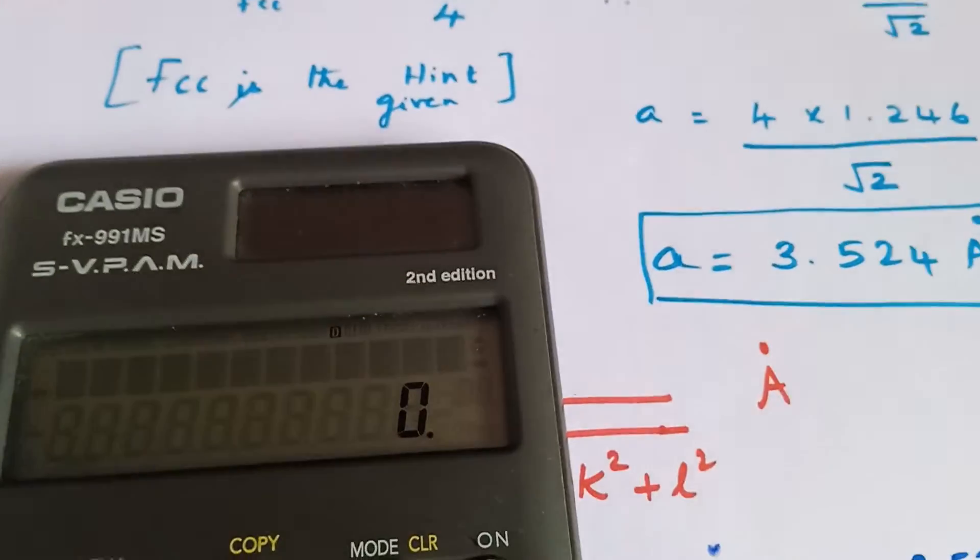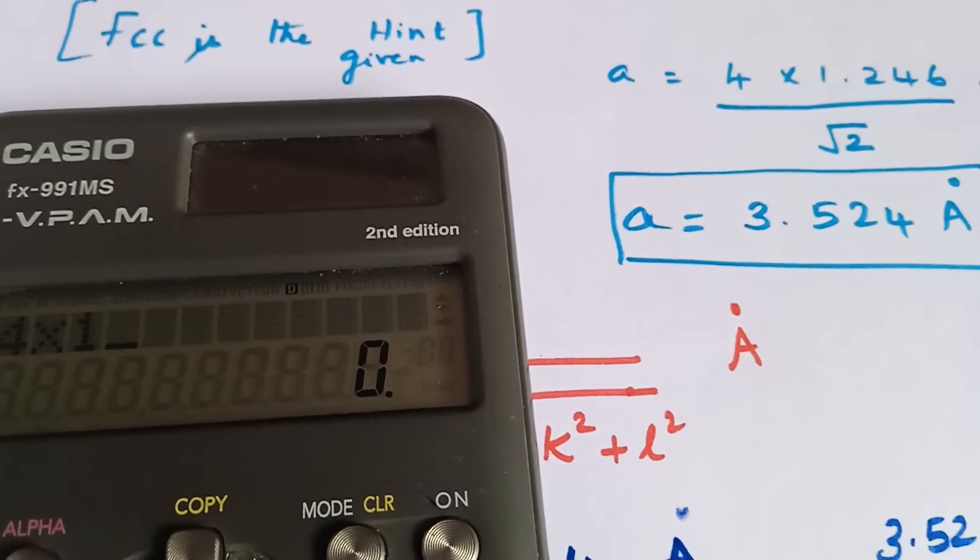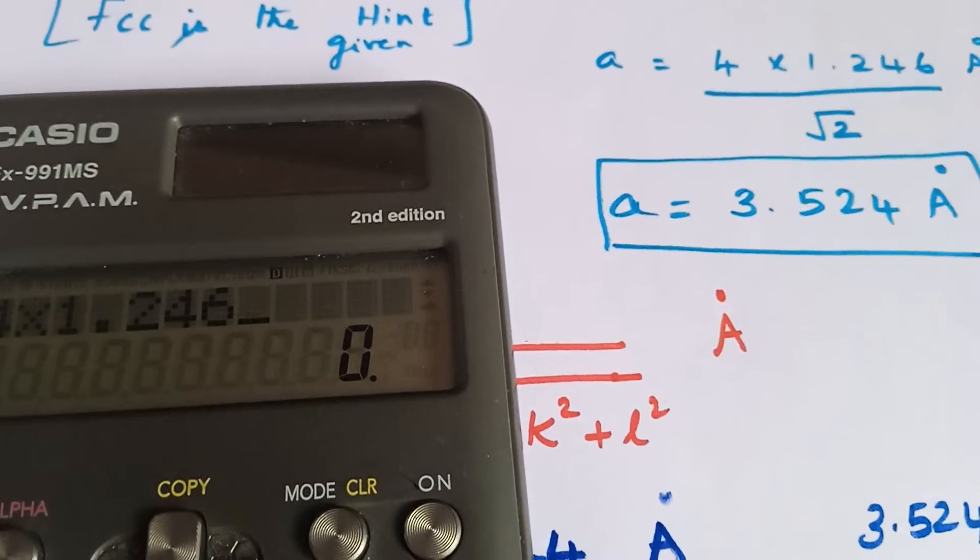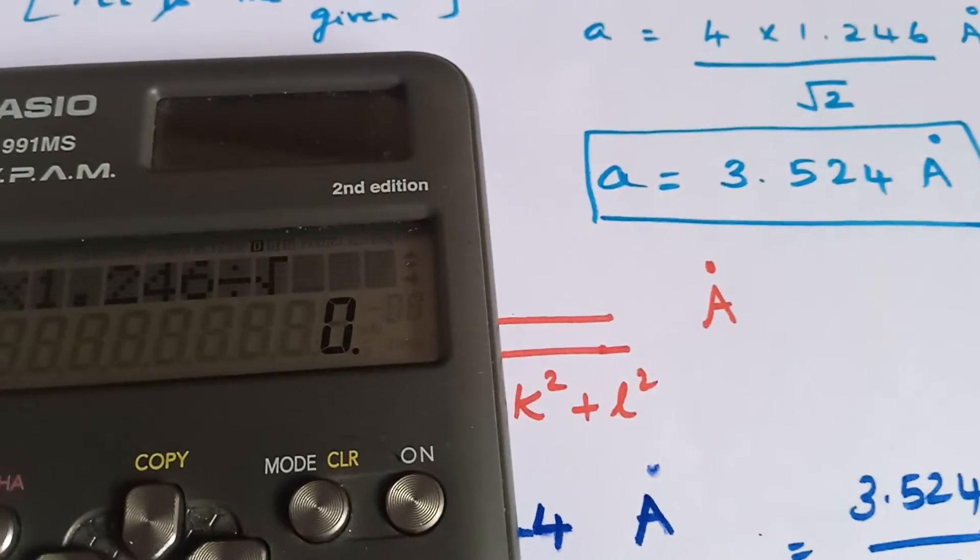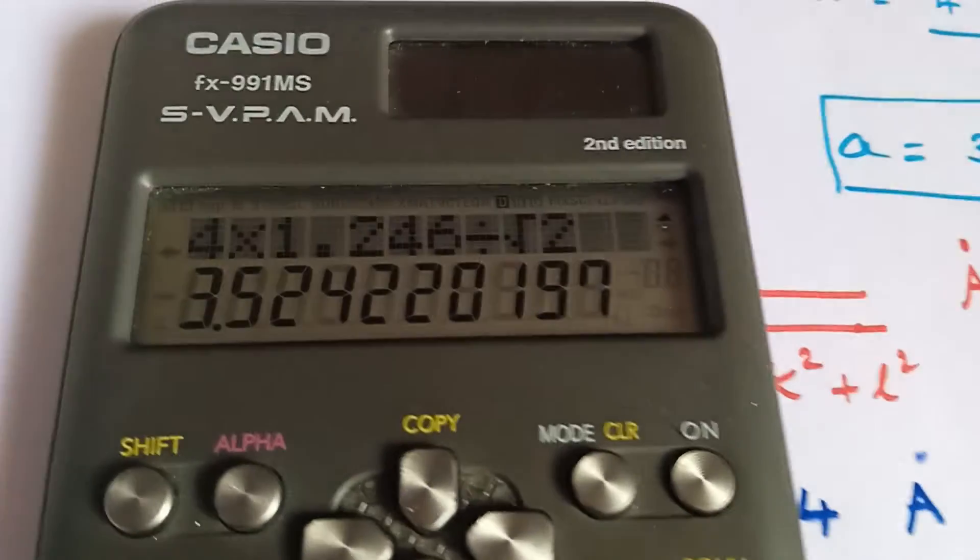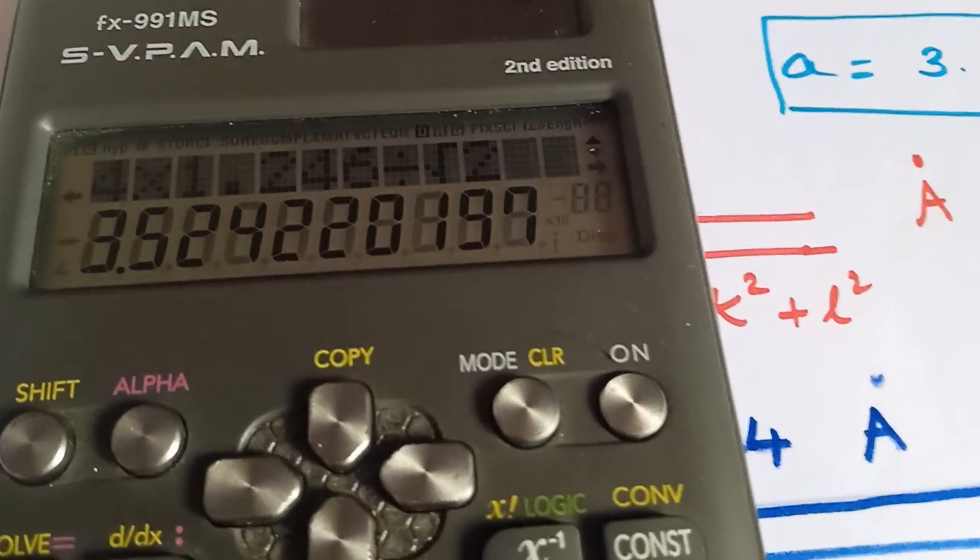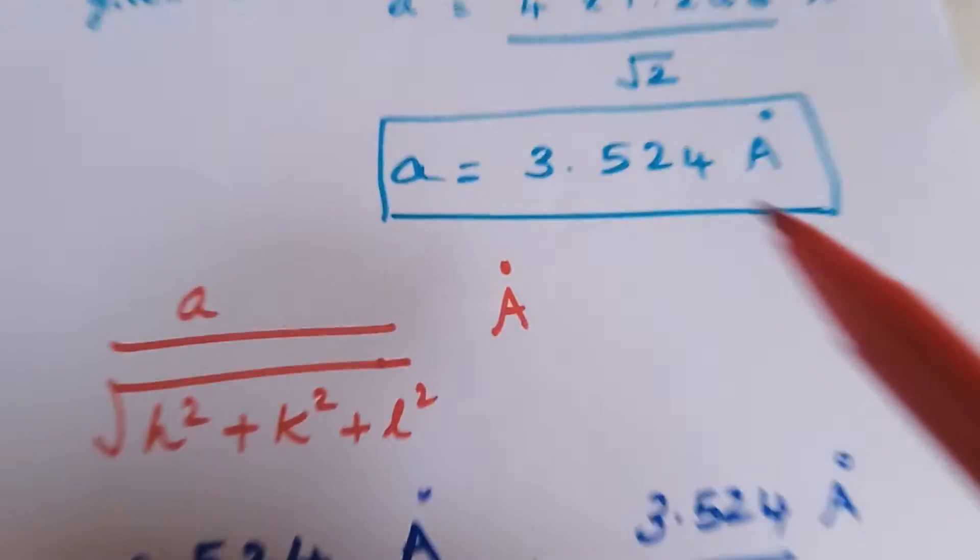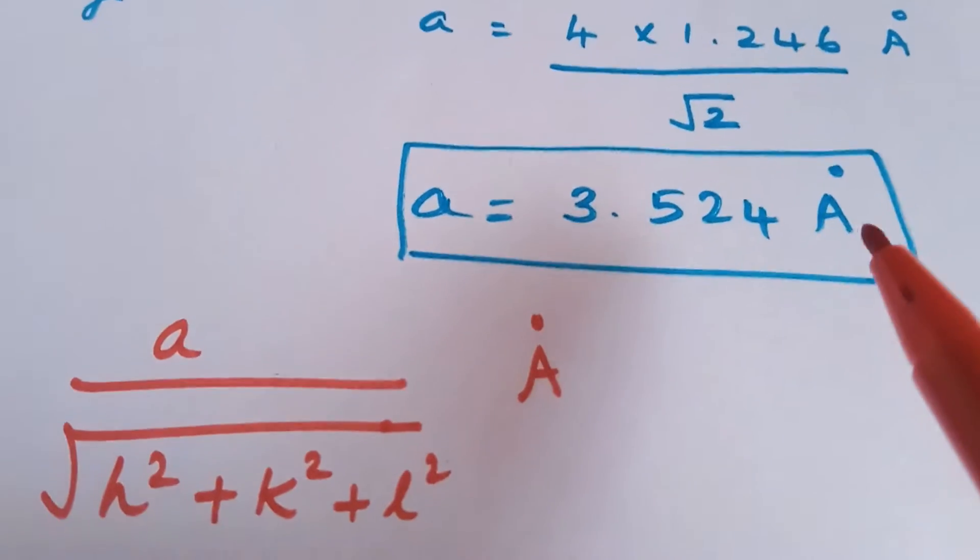Now, 4 into 1.246 divided by root 2, we get 3.524 angstrom unit. So, we get 3.524 angstrom unit.